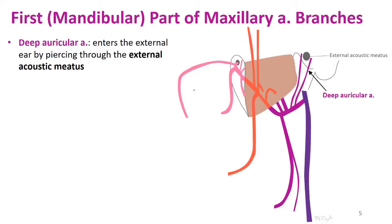Let's take it part by part and talk about the branches. We're going to stick to the first and second parts here. The third part will be covered when you learn about the pterygopalatine fossa. With the first part, we can see this is just branching off the external carotid artery before the lateral pterygoid muscle.